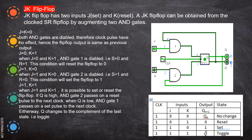Now let us assume the previous state is zero and one, and again we give J=1 and K=1. This zero comes to the K gate, and the one goes to the J gate. So one into one is one — here it becomes one. And because of one into zero, it is zero, so now it becomes zero. The previous state was zero and one, and now it becomes one and zero. Which means it is toggling — the state is said to be toggling.